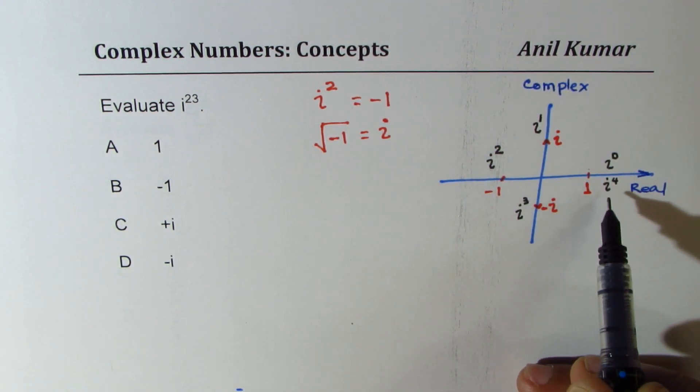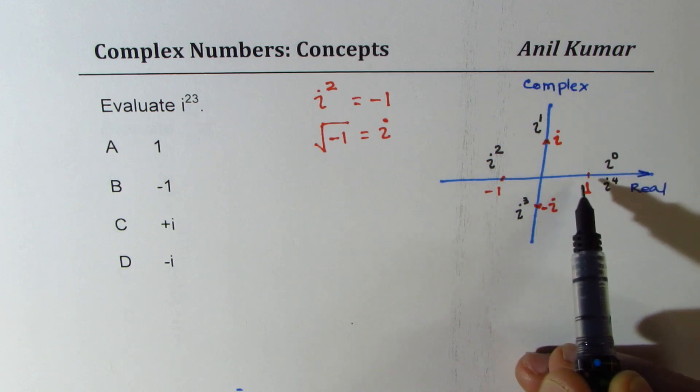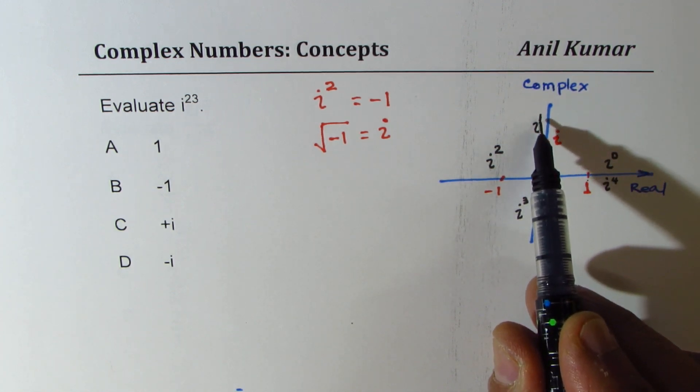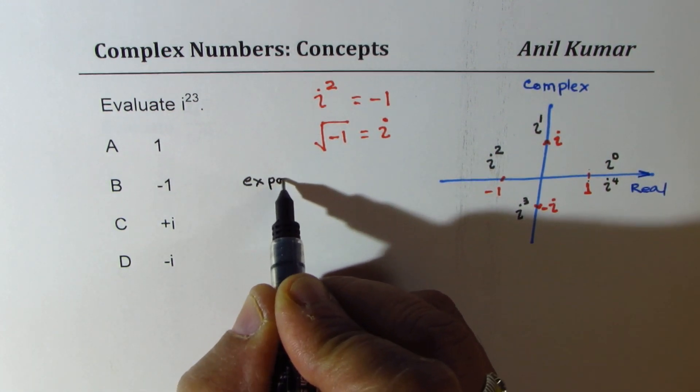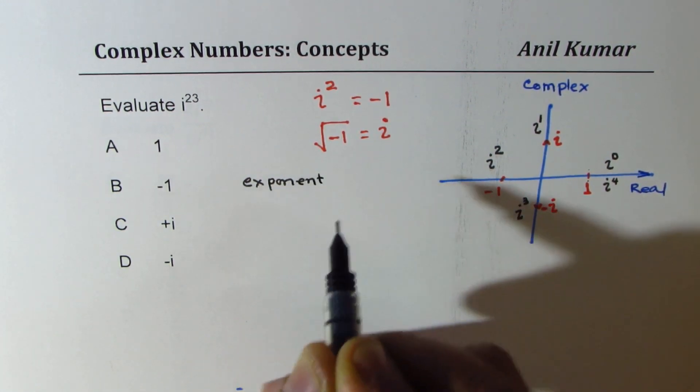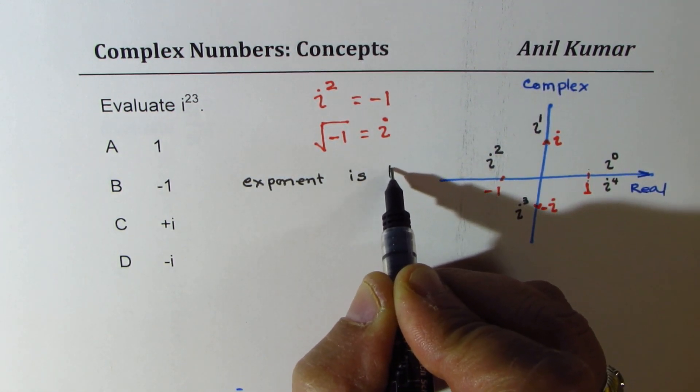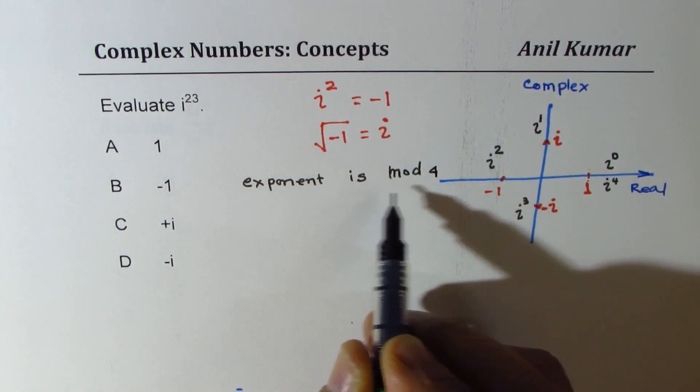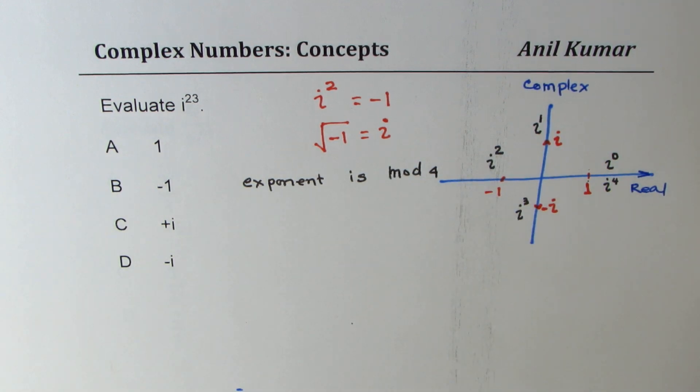So if it is a multiple of 4, you get plus 1. If I divide by 4 and the remainder is 1, then you get that as your remainder. So what you see here is that exponent is mod 4.